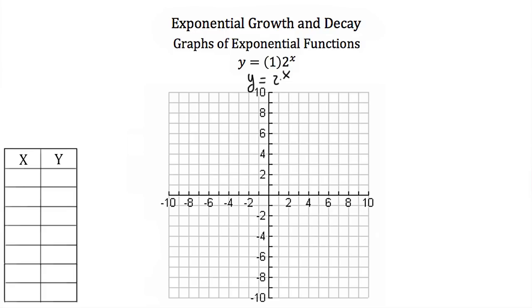To graph y is equal to 2 to the x, I'm going to pick several x values, plug them into the equation, solve for y, and then plot the resulting ordered pairs on the axis. The x values I'll use are negative 3, negative 2, negative 1, 0, 1, 2, and 3. I picked these because there's an even number on both sides of the y-axis to see what the graph looks like.